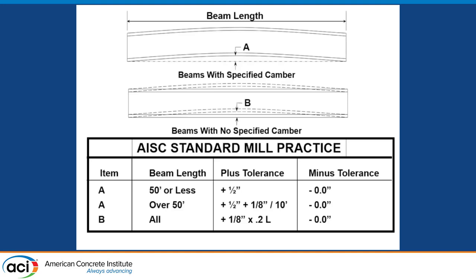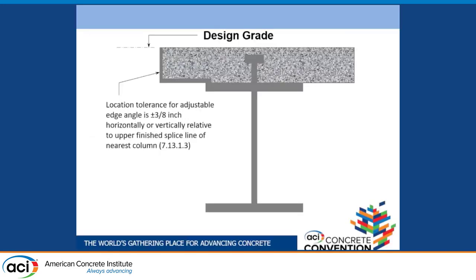Typically the camber tolerance is minus zero and plus a half inch for most members — with the member on its side in the shop after it's been cambered. What we found with survey data is that these cambers are typically half to three-quarters of specified camber whenever you get to the field. And the location for bent plate or closure plates at the edge of a building is plus or minus three-eighths of an inch in any direction, and that's if it's adjustable. The steel people have done a really good job of protecting themselves.